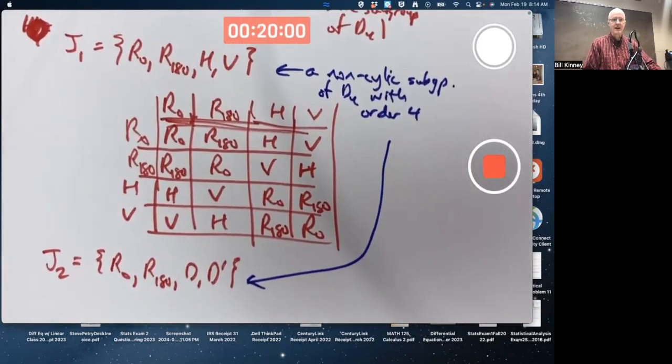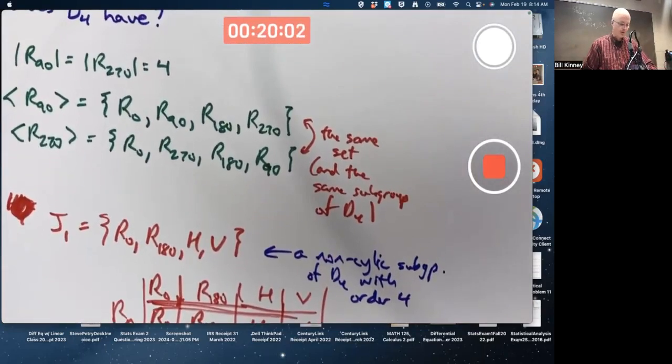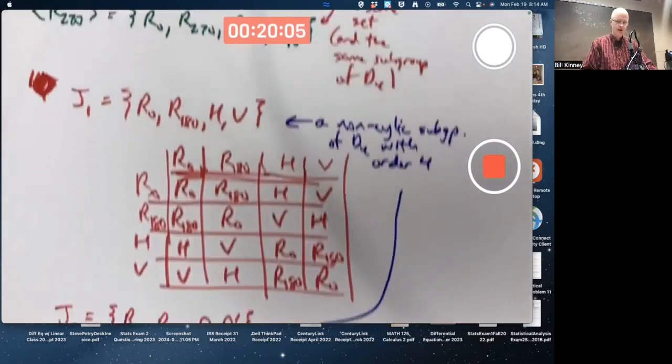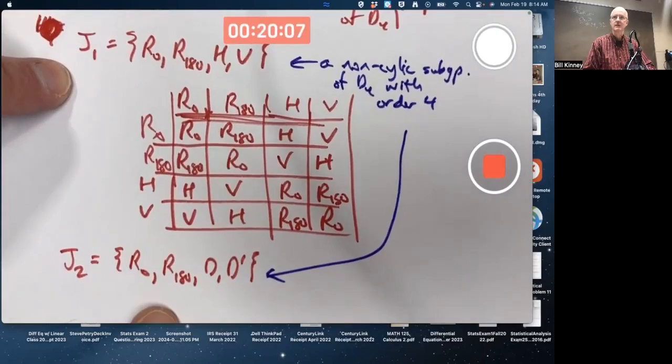So overall, then, it looks like there are three subgroups of order 4, the cyclic one and two non-cyclic ones.